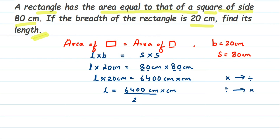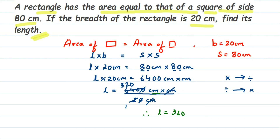So it will go to division: L is equal to 6400 centimeter multiplied by centimeter, divided by 20 centimeter. The centimeter units cancel and you are left with centimeter. Now I use cancellation: cancel 640 by 2. 2 threes are 6, 2 twos are 4, and 2 zeros are 0, giving us 320. So length is equal to 320 centimeter.